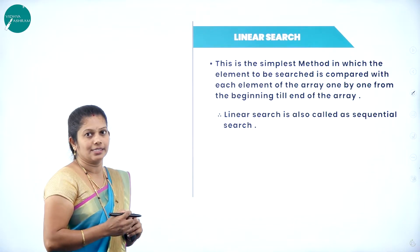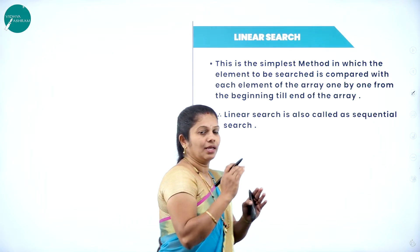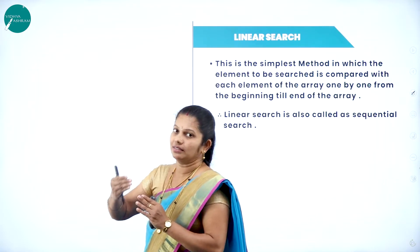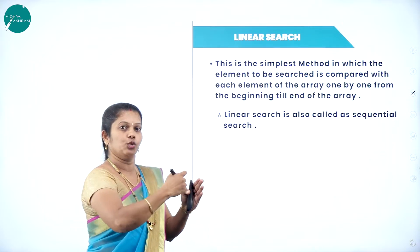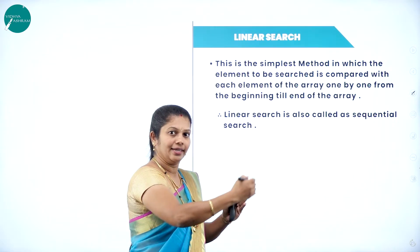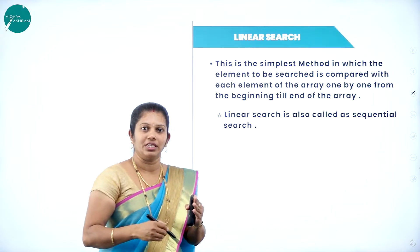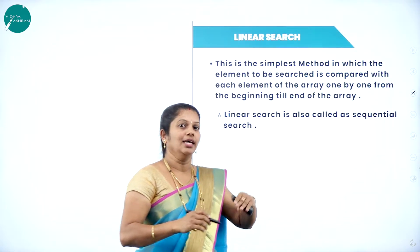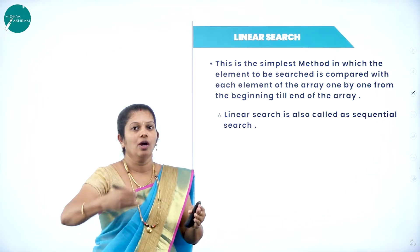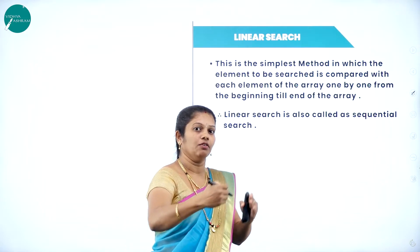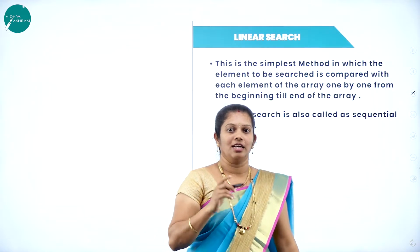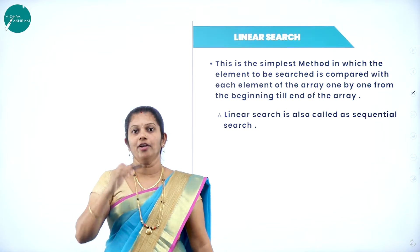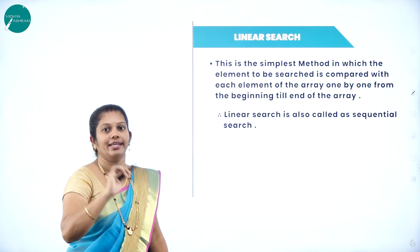Now we will explain linear search. Consider this example: parents came to the college searching for their child. In the first room, they check the first candidate, second candidate, third candidate — all candidates one by one. Then they move to the next class and search one by one again. Consider you have ten rooms — the parents start searching from the first room, from the first candidate till the last candidate. This is called linear search: one by one, from the beginning till the end, all elements are searched until they find a particular element.